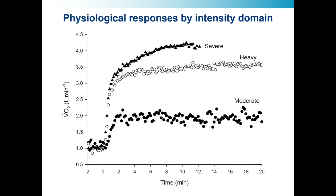These are the physiological responses you typically find if you do constant load exercise at different intensities. At the bottom with the black circles we have moderate intensity exercise — if you start exercise at time zero, your oxygen uptake will begin to rise and eventually plateau out in an exponential decay in the VO2 response, and after two to three minutes you'll reach a steady state. That's your moderate intensity domain.